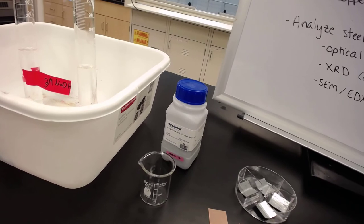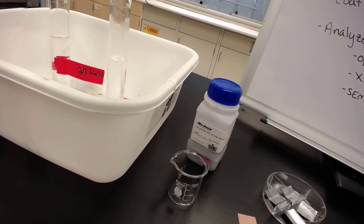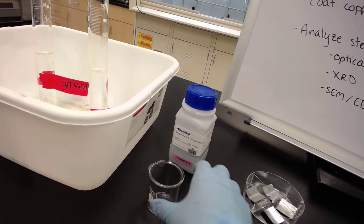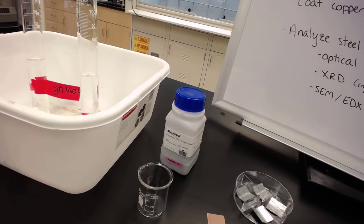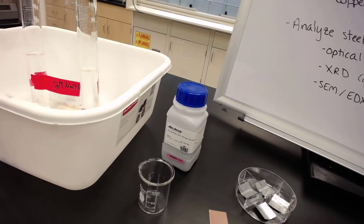When we coat our copper, we're going to use this 3 molar NaOH with zinc in the beaker, then add the copper to coat it. Finally, we'll put it on a hot plate to anneal it.